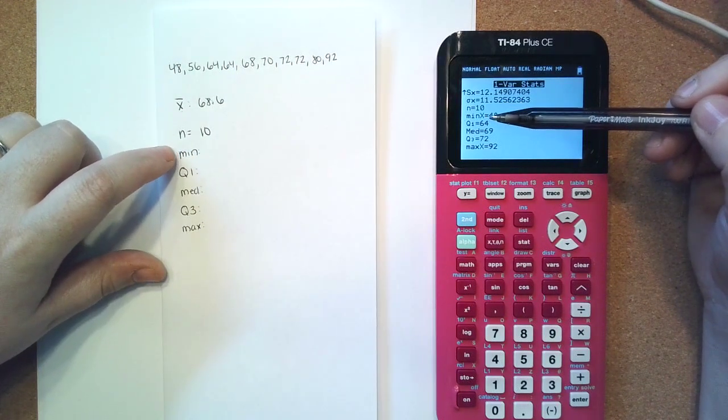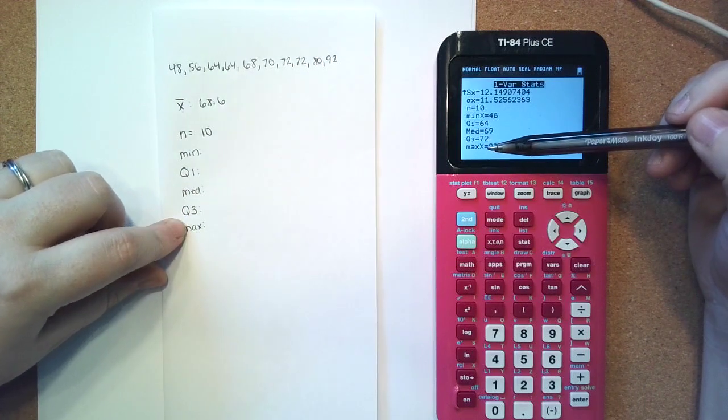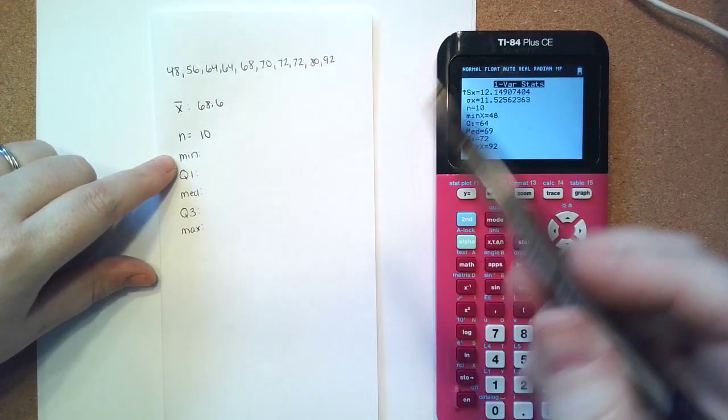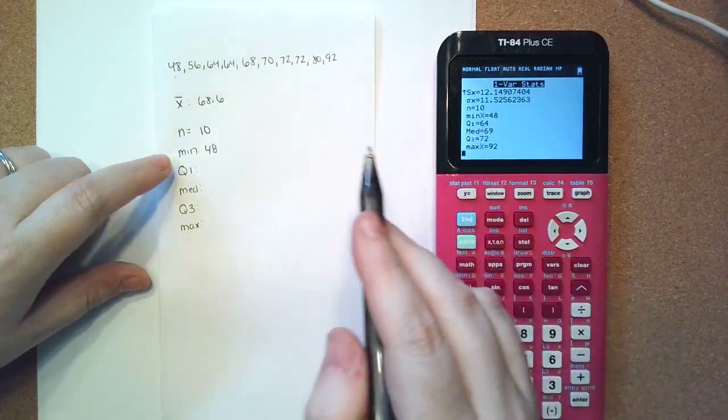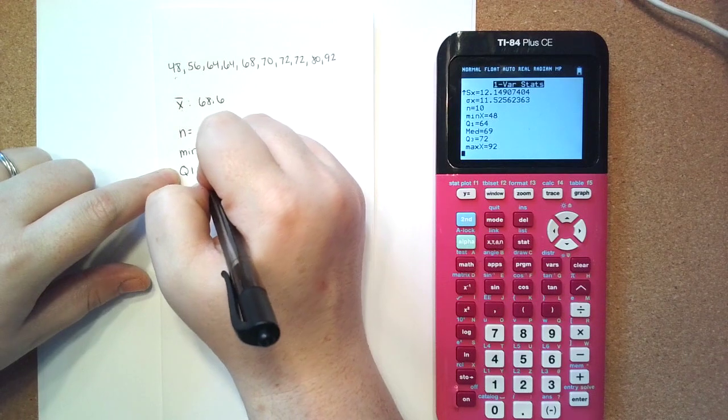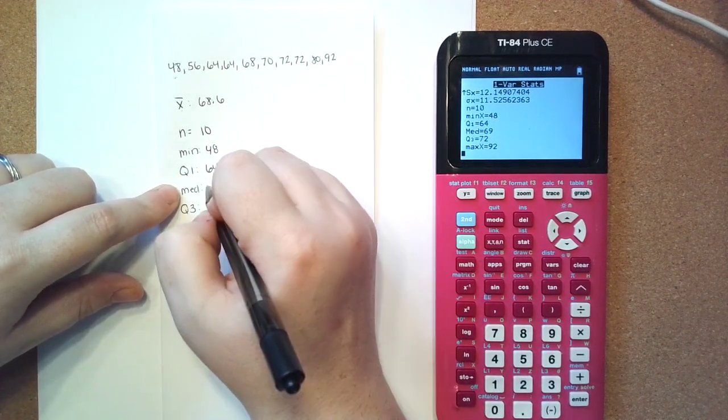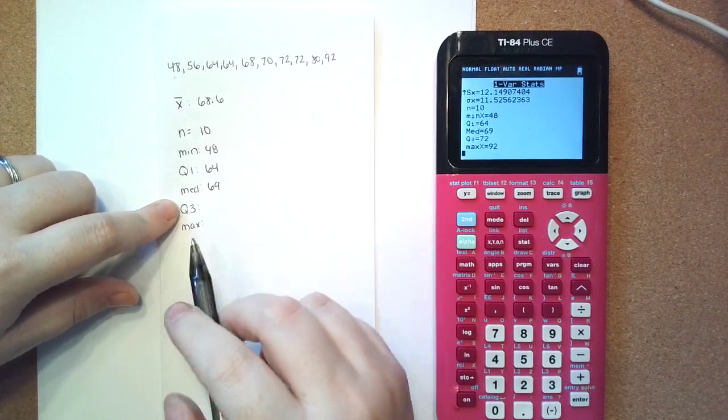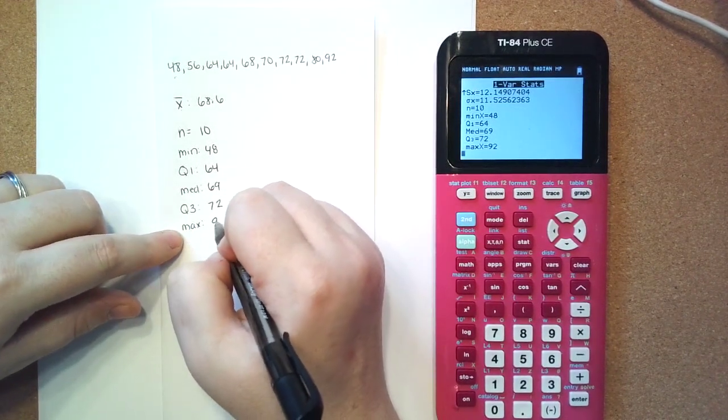So we have n equals 10, tells you how many data points we have. Our five number summary is your minimum, your Q1, your median, your Q3, and your maximum. So our minimum is 48, which is what we had here. Our Q sub 1, or our Q1 quartile 1, is 64. The median, so in the middle, is 69. Q3, so quartile 3, is 72, and our maximum number is 92.